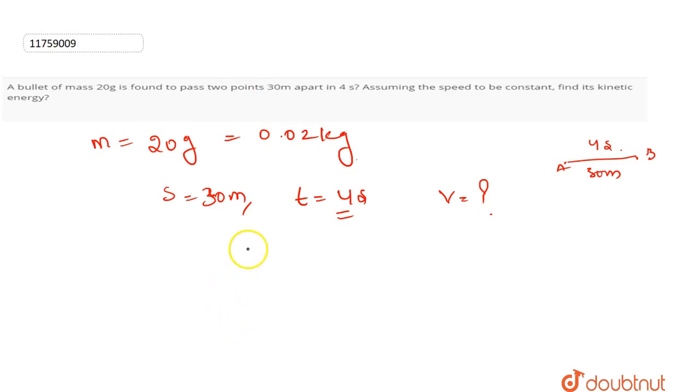First, we will calculate this velocity. Speed equals distance upon time. We will calculate the velocity. Distance covered by time taken. This is 30 by 4. The velocity of the bullet is 7.5 meter per second.